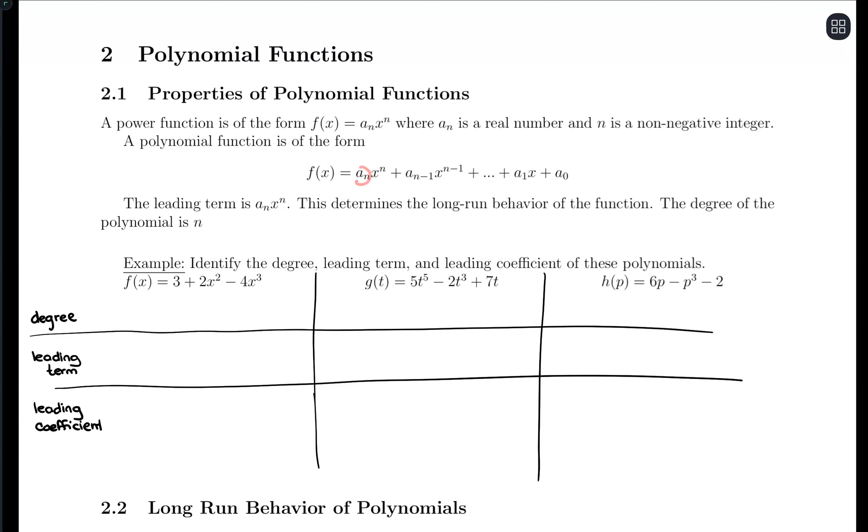We have a coefficient, which is just a real number, times our variable with an exponent. The key is that the exponent should be a positive whole number.